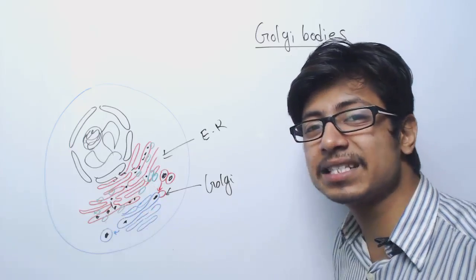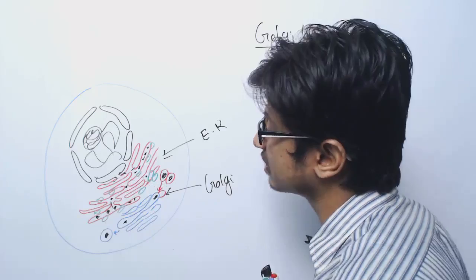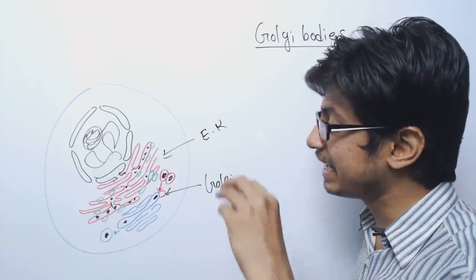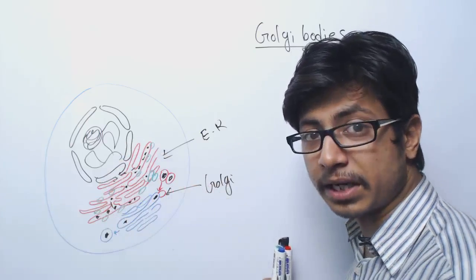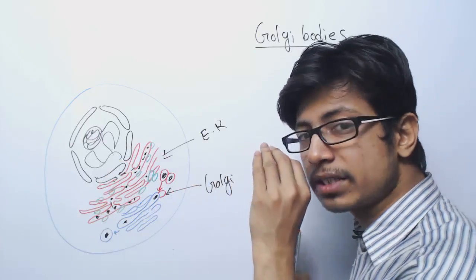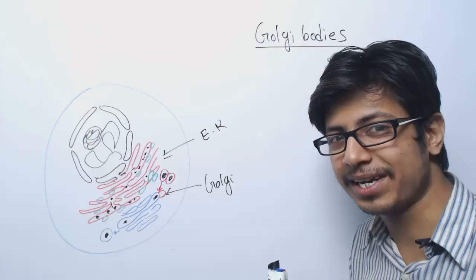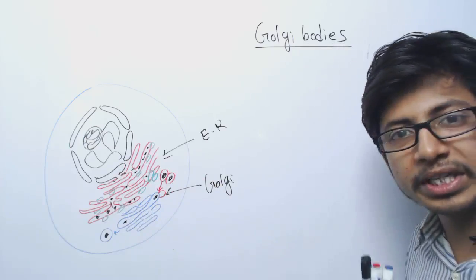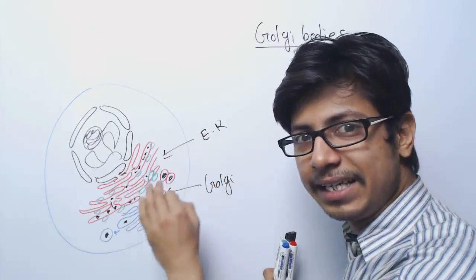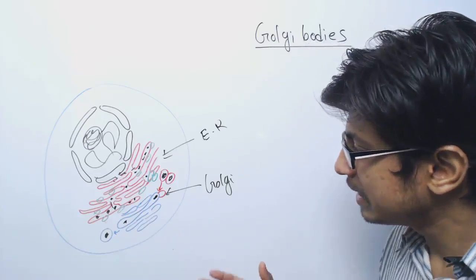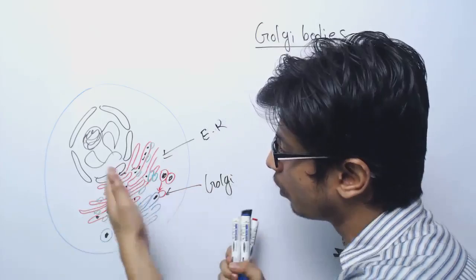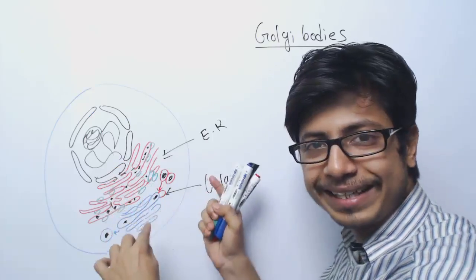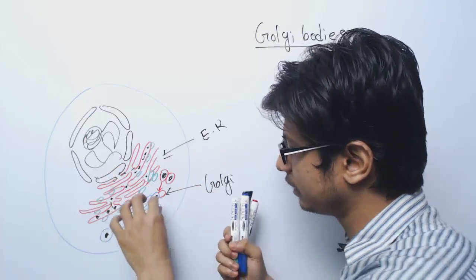Those endoplasmic reticulum regions have a lumen — the internal site of the endoplasmic reticulum — which contains the properly produced protein. Proteins are synthesized on the surface of the endoplasmic reticulum, because the ribosome or protein synthesizing machinery is attached to the membrane of the ER. Once the proteins are synthesized, those proteins are inserted into the lumen of the endoplasmic reticulum, and we know those are called rough endoplasmic reticulum.